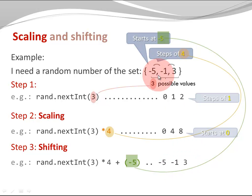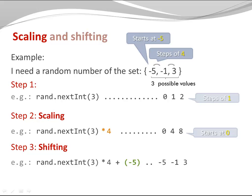By adding minus 5, I receive one of the following numbers: minus 5, minus 1, or 3 — and those are the very elements of my desired set. We can simplify and just say: random.nextInt(3) times 4 minus 5. That will give me one of the following numbers — minus 5, minus 1, or 3 — randomly.